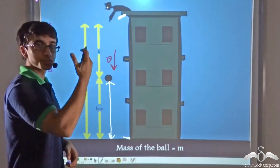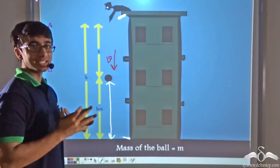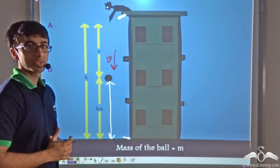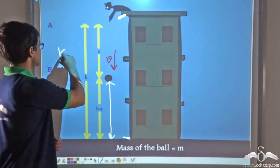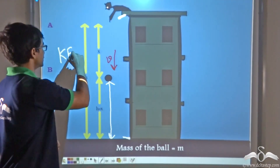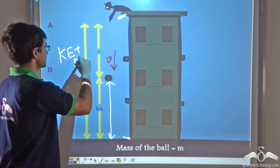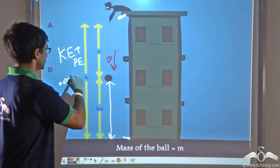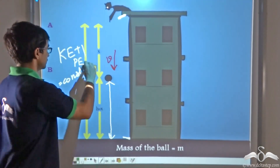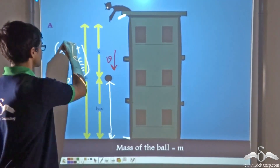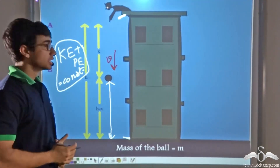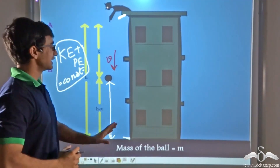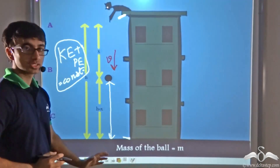that is from the roof to the ground, the total energy of the ball remains constant. That is, the sum of kinetic energy and potential energy is constant. This is what we have to prove. So initially we consider the height of the building is H — that is from the bottom to the top.